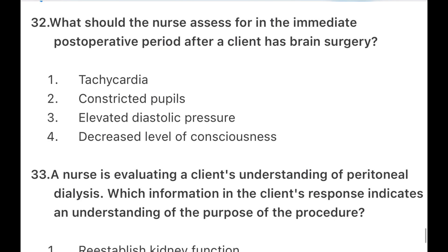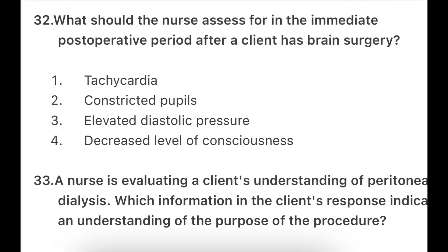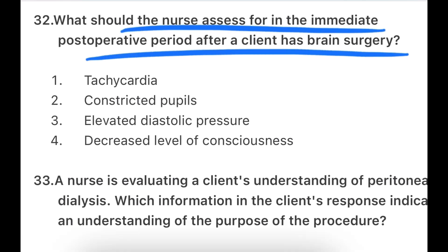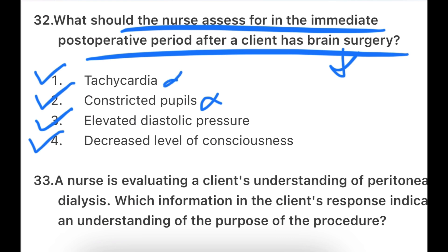Next question: What should the nurse assess for in the immediate post-operative period after the client has brain surgery? The options are: tachycardia, constricted pupils, elevated diastolic pressure, or decreased level of consciousness. If someone has brain surgery, tachycardia is not the priority — it is not in immediate action. Constricted pupils are not the answer either, and not decreased diastolic pressure.